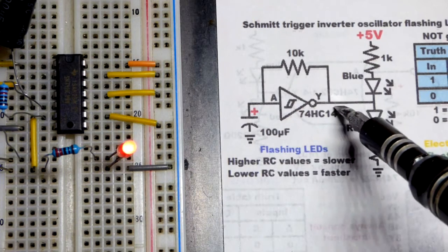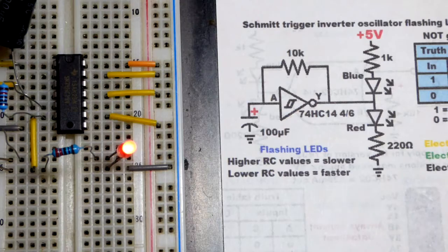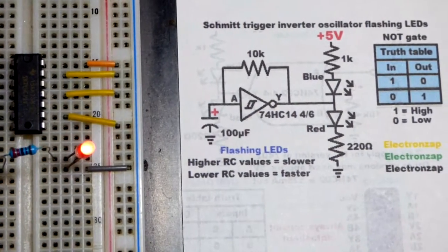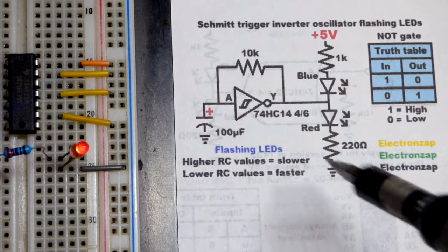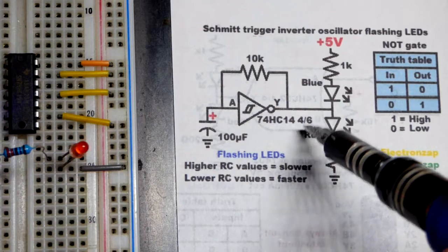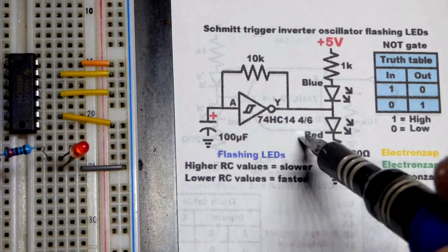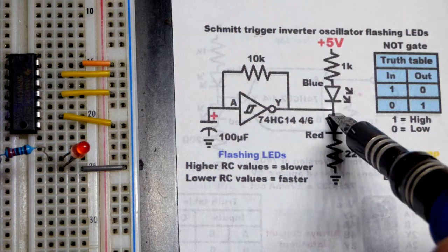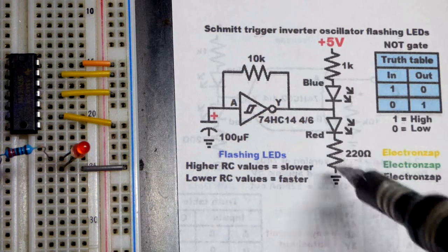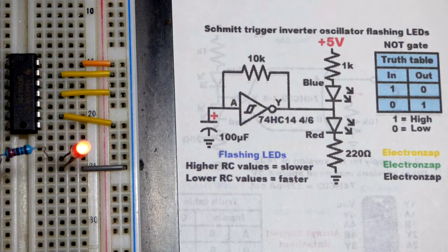Now since we're using a high-speed CMOS version of the 7414, which I used in a lot of videos, we're not going to do a lot of detail about it in this video. But the high-speed CMOS versions, they can usually power LEDs just fine, up to 25 milliamps of current.